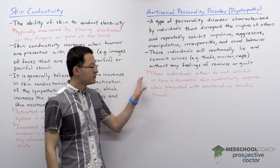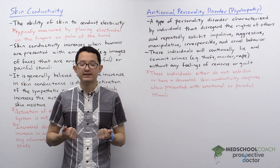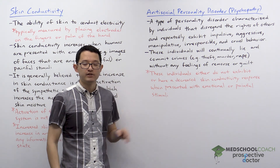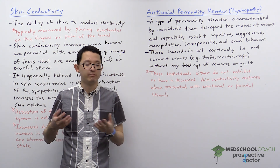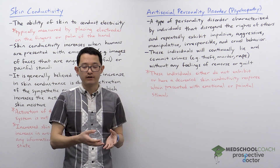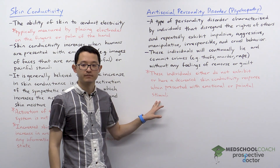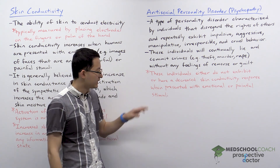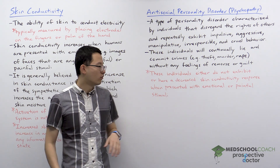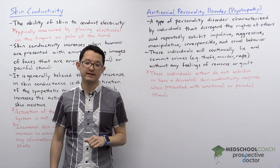What's interesting is that individuals with antisocial personality disorder have been shown to not exhibit a skin conductivity increase when presented with emotional or painful stimuli. Psychologists have compared regular individuals with individuals with antisocial personality disorder — regular individuals show an increase in skin conductivity with such stimuli, whereas those with antisocial personality disorder showed either no response at all or a decreased response. That's why antisocial personality disorder is related to skin conductivity.